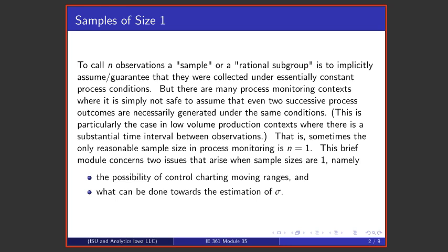There are times where the only reasonable sample size in process monitoring is a sample size of one — the only rational subgroup, the only rational sample size is one. This module concerns two issues that arise when sample sizes are one: first, we'll briefly discuss and dismiss the possibility of charting moving ranges, and then we'll talk about what could be done towards the estimation of a process standard deviation when sample sizes are one.